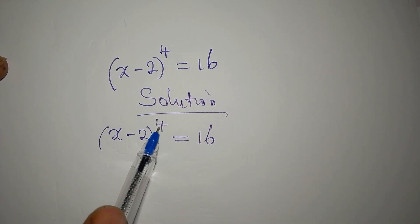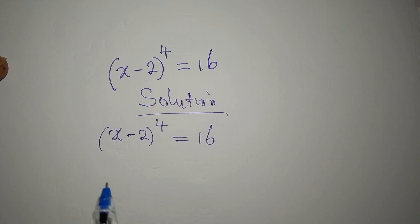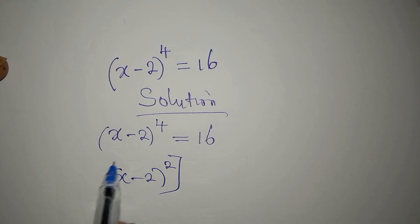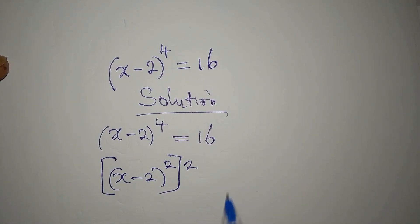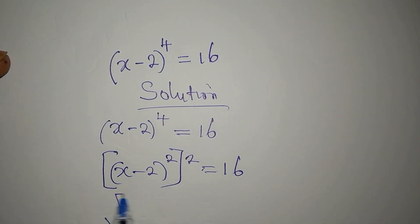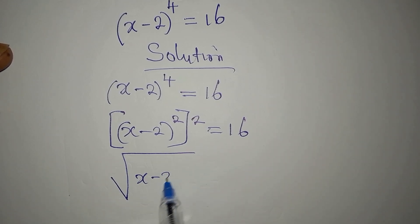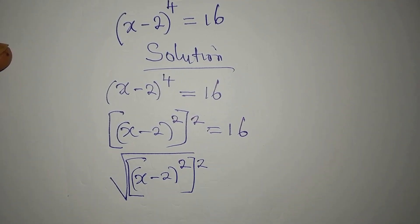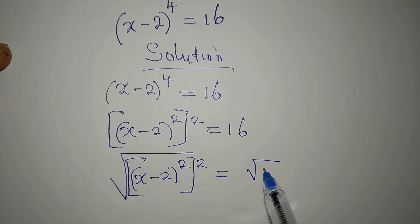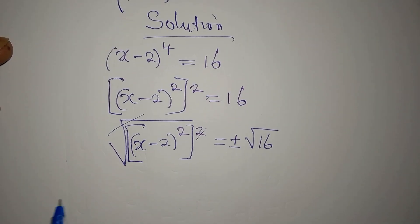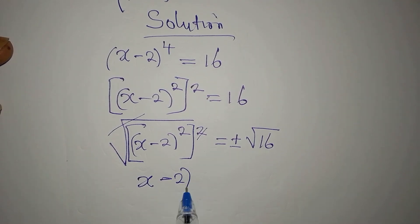We are going to break this 4 so that we have (x minus 2) to the power of 2, and then the whole of this to the power of 2, equal to 16. Now if we take the square root of both sides, the square and the square root cancel, leaving (x minus 2) squared equals plus or minus the square root of 16.